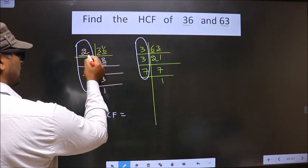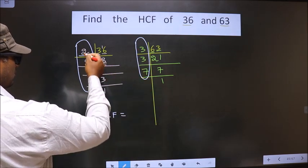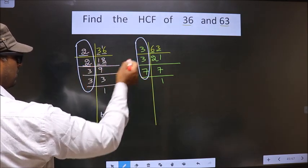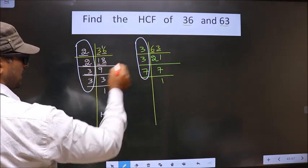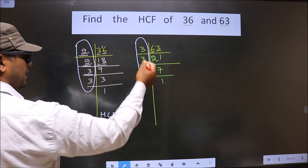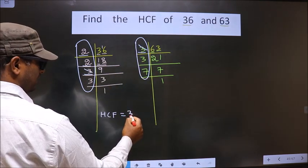Starting with the number 2. Do we have 2 here? No. So go to the next number 2. Do we have 2 here? No. So go to the next number 3. Do we have 3 here? Yes. So you cut 3 and write here.